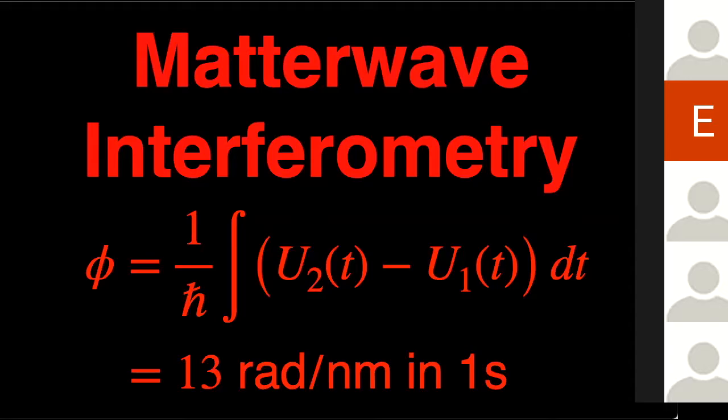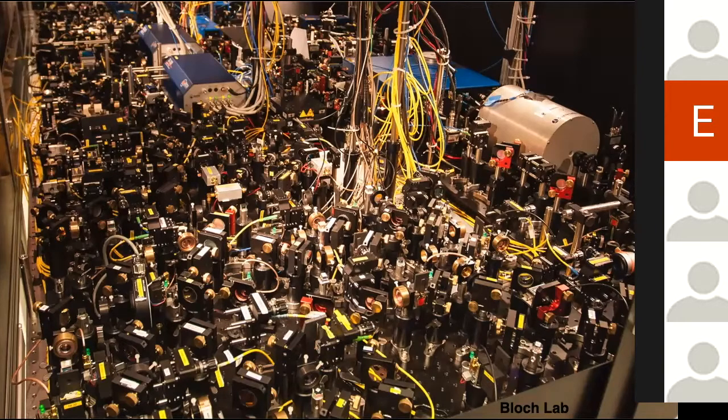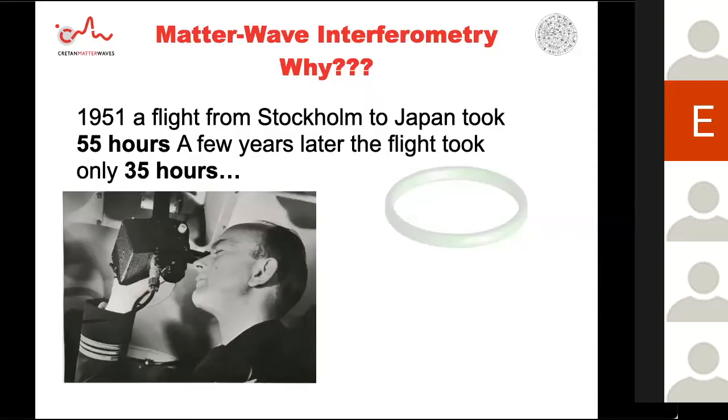So what does that mean actually? Well, it means that if I just take a rubidium atom and I lift it only by one nanometer, ten times its own radius only for just one second, then I get 13 radians difference in between the two phases. So that's enormous. So it measures very small differences in energy very efficiently. So what's the problem? This is an optical table from Emmanuel Bloch in Max Planck Institute in Munich.